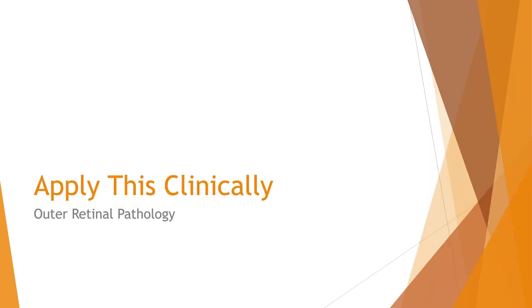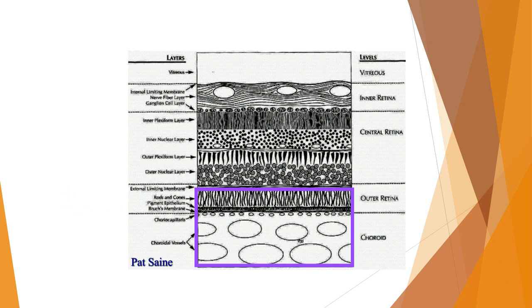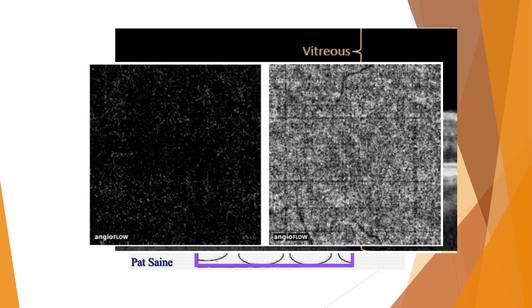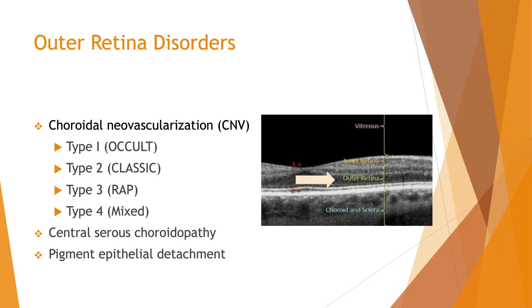Now for the second part of the webinar — clinical cases. Some are my own patients, some have been shared with me. For purposes of this webinar, we're discussing outer retinal disease, focusing on the area above and below the RPE on the B-scan and the two angiogram slabs: outer retina and choriocapillaris. There are essentially four types of choroidal neovascularization. I'll try to show an example of each, then discuss central serous retinopathy and PEDs.